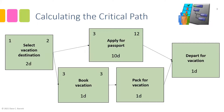We calculate the Early Start for 'Pack for Vacation' by adding one to the Early Finish of 'Book Vacation,' giving day four. The Early Finish is also day four: four plus one minus one equals four. Now we have more than one activity merging into 'Depart for Vacation.' The rule on a forward pass is to take the greatest Early Finish — in this case 12, which is greater than four. Add one, and that becomes the Early Start of 13 for 'Depart for Vacation,' giving an Early Finish of 13.